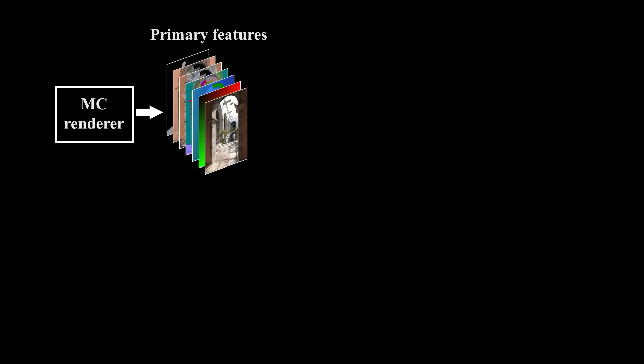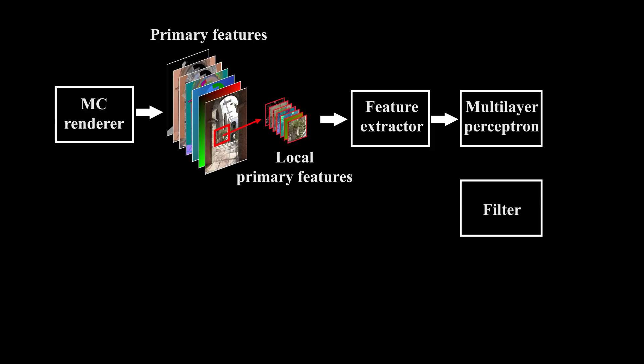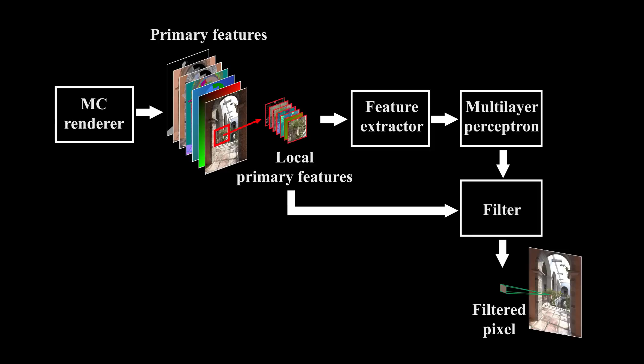In our system, the renderer outputs a set of primary features at each pixel, including screen position, color, world position, and shading normal. A local neighborhood of each pixel is processed to get a set of secondary features such as feature statistics, among others. These are given to a multilayer perceptron neural network to output a set of filter parameters. Finally, the filter takes these computed parameters and the noisy output of the rendering system to generate a filtered pixel.